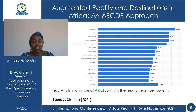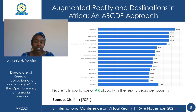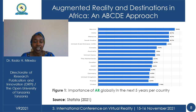Mexico is the country with the highest percentage, scoring 94% for the importance of augmented reality. India follows Mexico with a score of 87%. Malaysia and Saudi Arabia have also scored 87% respectively. The rest of the other countries, including Africa, have a score of 74%. Figure 1 shows that augmented reality has high scores in terms of its importance globally.